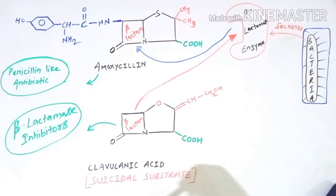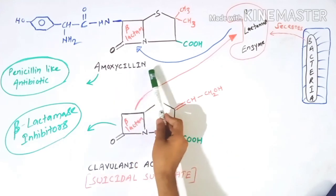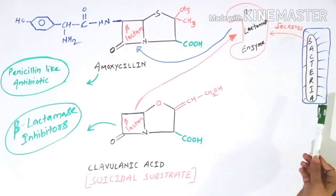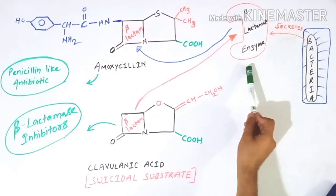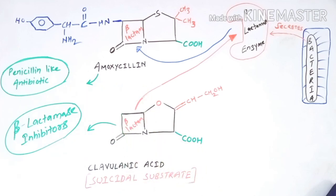With the enzyme inactivated, amoxicillin can reach the bacteria and kill them. This is how the whole mechanism works, which is why we see several medicines available in the combination of amoxicillin along with clavulanic acid. Thank you.